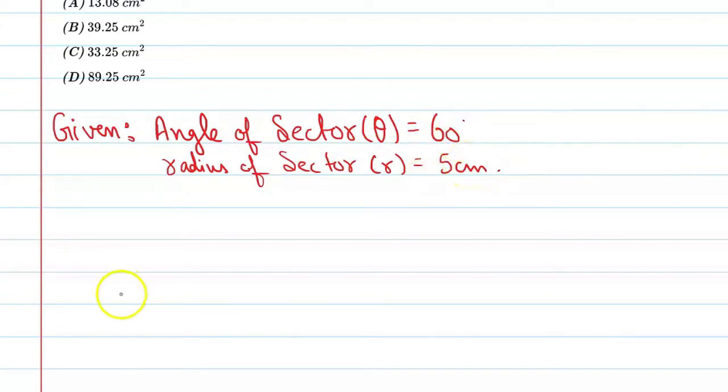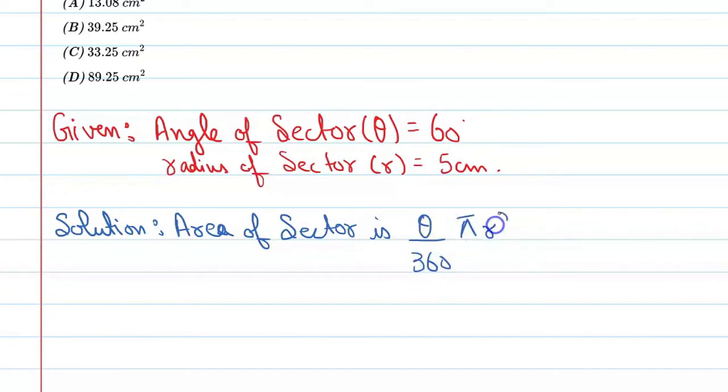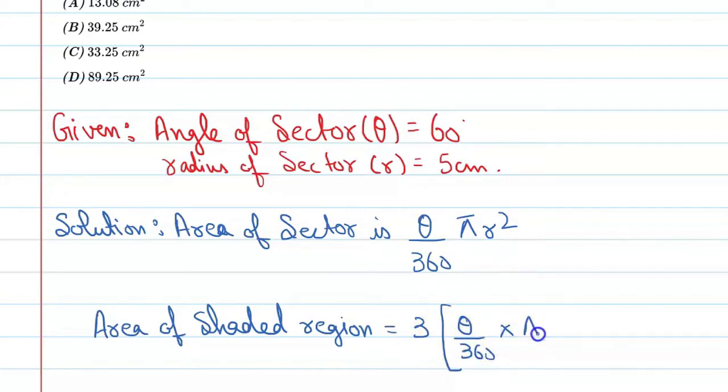Alright, so area of sector is theta upon 360 into pi r squared. So area of shaded region is 3 into theta upon 360 into pi r squared.